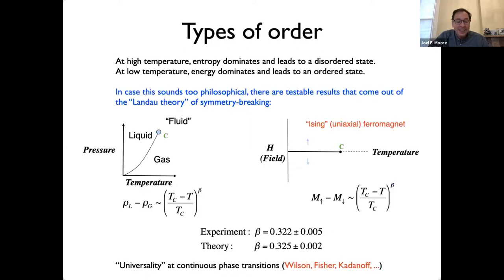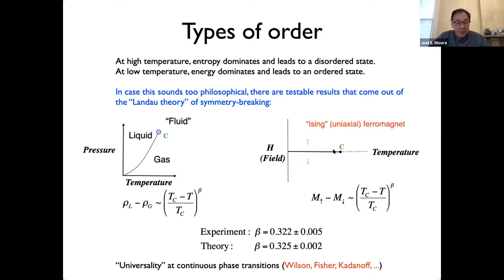Magnets break time reversal symmetry. This idea of symmetry breaking leads to some amazing predictions — universality of second-order phase transitions. For example, the liquid-gas transition in water near a critical point shows the density difference disappearing as a power law in temperature. An Ising magnet near the Curie point shows spontaneous magnetization disappearing with the same exponent beta — even though one is a liquid, one is a solid, one is classical, one involves quantum spins.